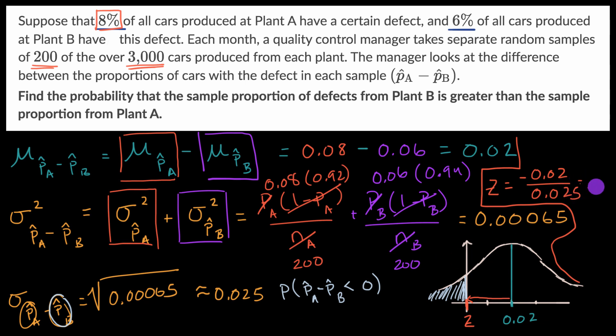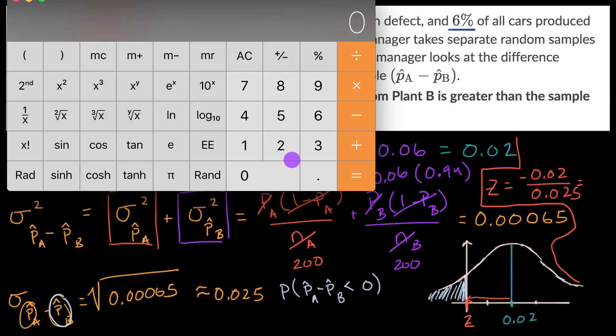Which is going to be equal to, get a calculator here, we get 0.02 divided by 0.025 is equal to that, and we are going to be to the left of the mean. So our Z is going to be approximately negative 0.8. I'm saying approximately because this was approximate over here when we figured out the standard deviation.